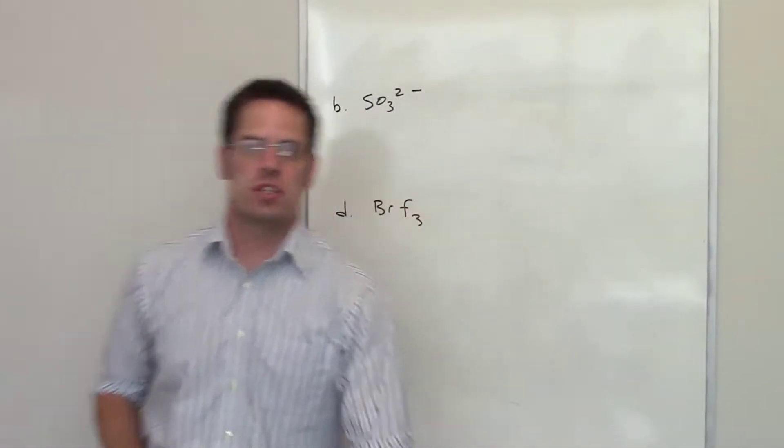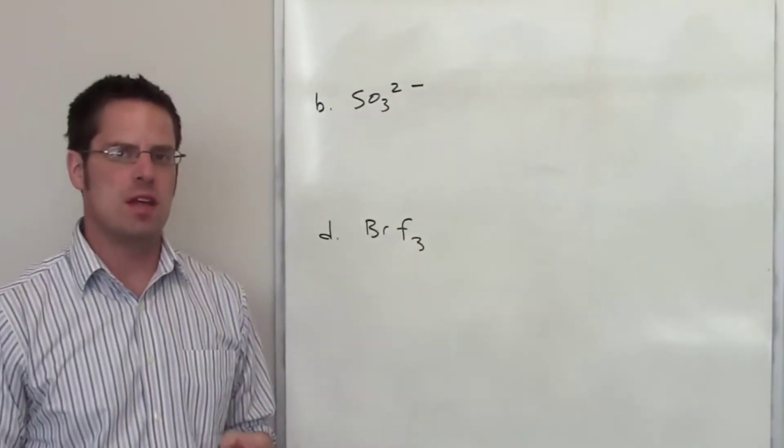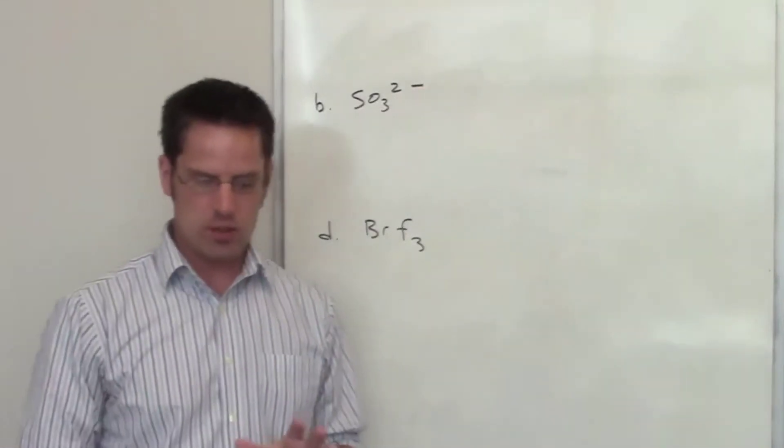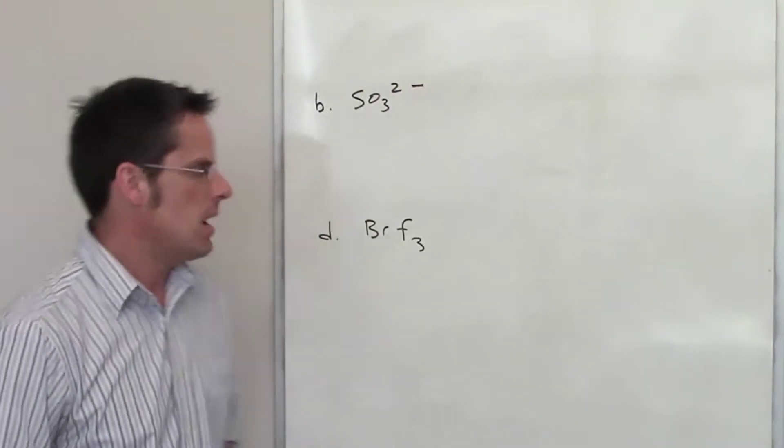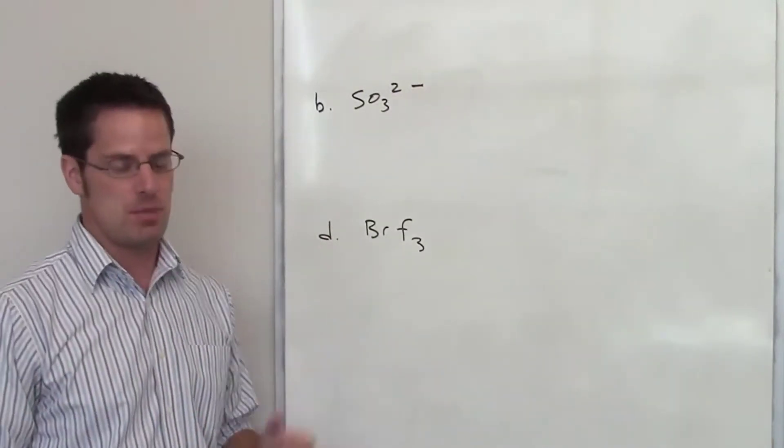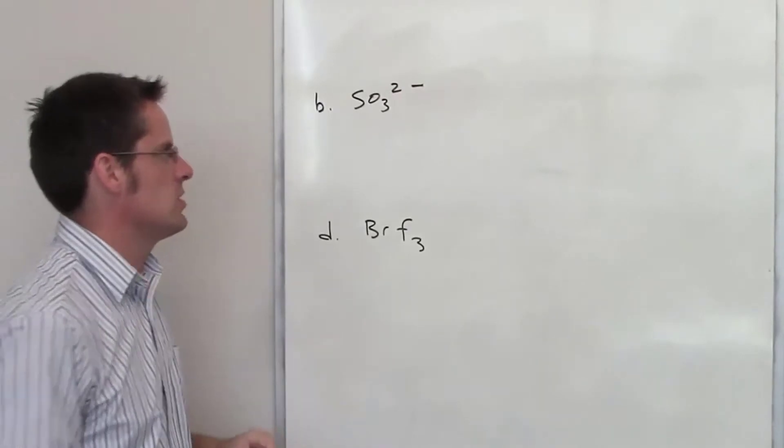This question asks us to draw the Lewis structures for a few different compounds and then determine what their electron domain and molecular geometries each are. I'm not going to do it for all the examples I illustrated in the previous video, but I will do it for these two.